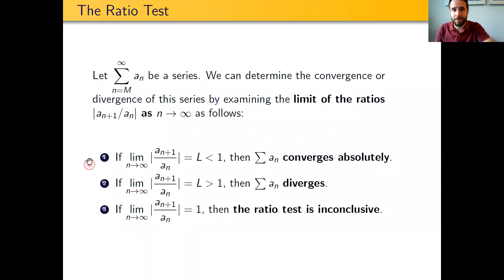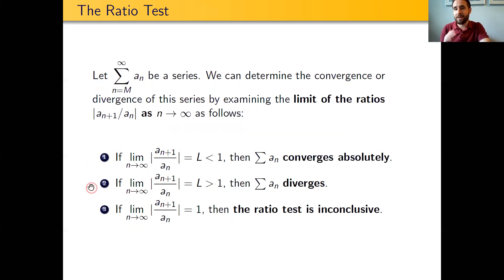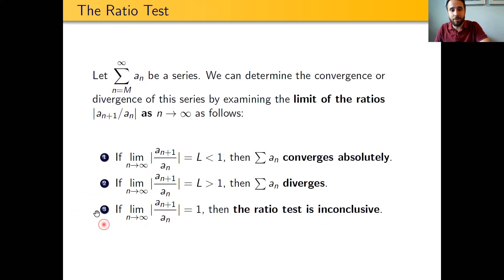If the limit as n goes to infinity of that ratio equals a number L that is less than one, then our series a sub n is known to converge — and not only does it converge, it converges absolutely. On the other hand, if this limit L is greater than one or equal to infinity, then the series a sub n diverges. These are two really strong results: either converge absolutely or diverge. However, if the limit is actually equal to one, the ratio test is completely inconclusive — we cannot draw any conclusions at all.